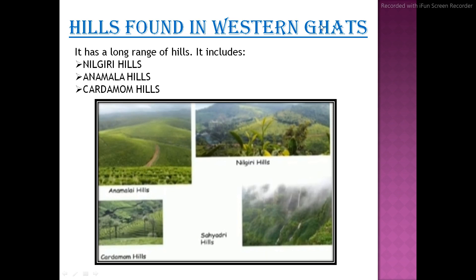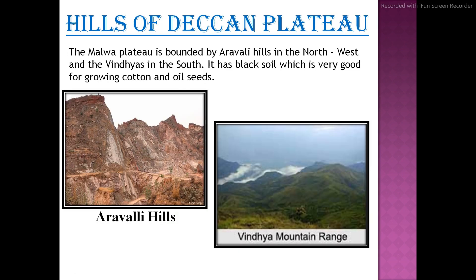Hills found in the Western Ghats include a long range of hills such as the Nilgiri Hills, Anamala Hills, and Cardamom Hills. The Malwa Plateau is bounded by the Aravalli Hills in the north and west, and the Vindhyas in the south. It has black soil which is very good for growing cotton and oil seeds.